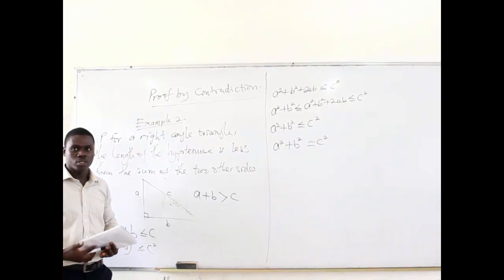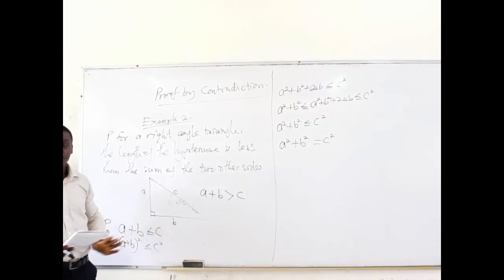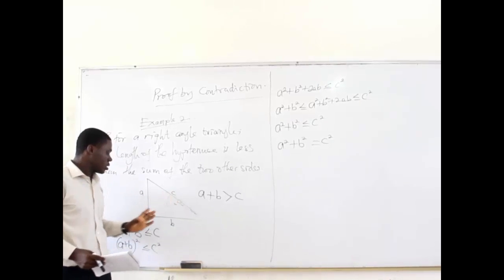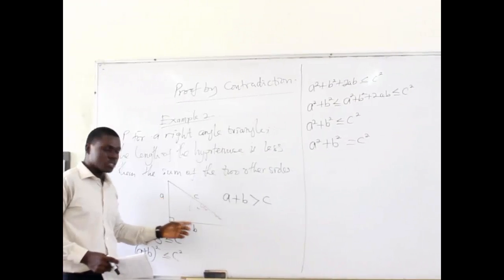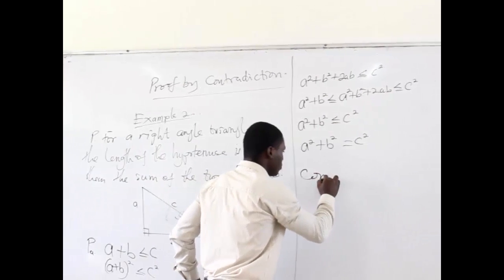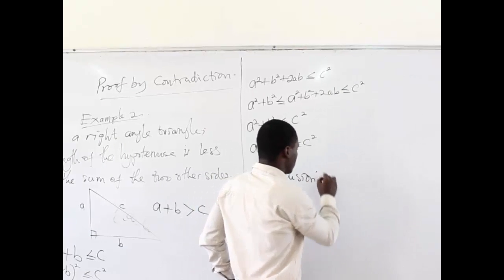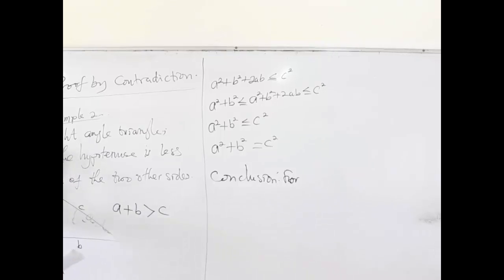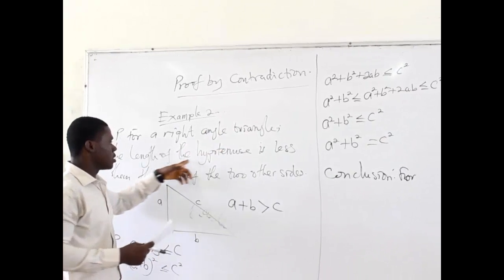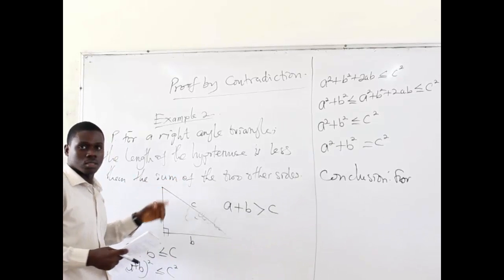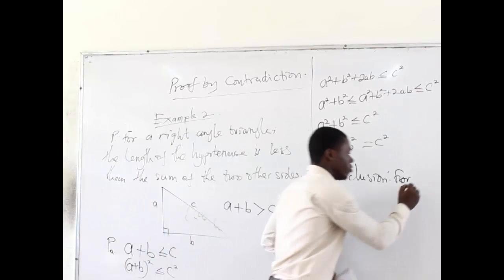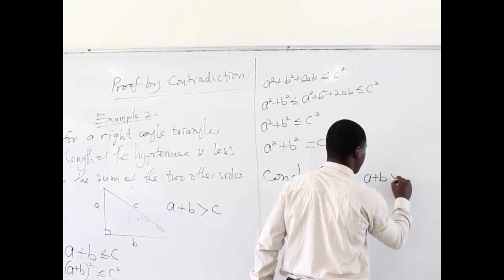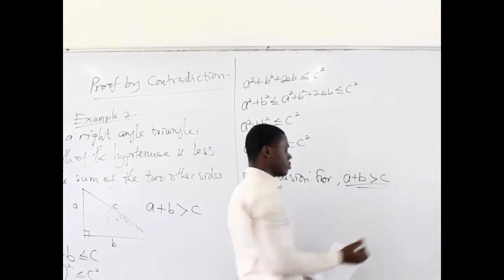We will rather conclude that, in fact, for any right angle triangle, the length of the hypotenuse is less than the sum of the other two sides, which from the diagram we see as A plus B is actually greater than C. Proof completed.